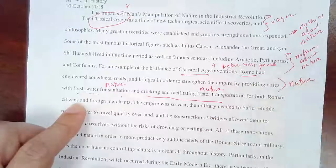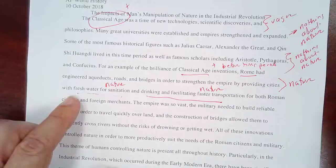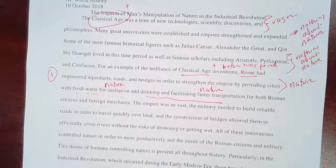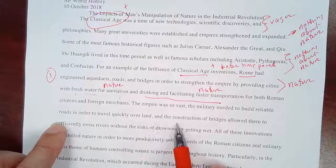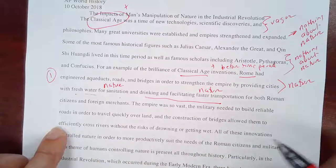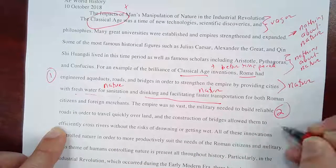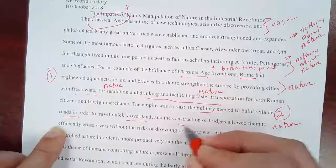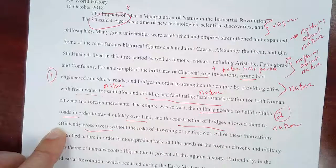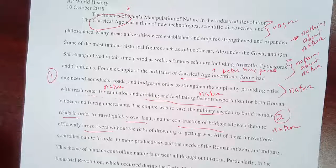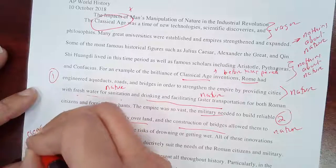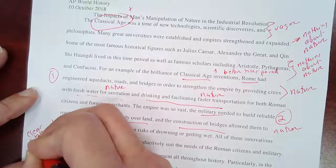We have engineered aqueducts — that's definitely an issue that connects up with nature. Then: 'both for Roman citizens and foreign merchants, the empire was so vast the military needed to build reliable roads in order to travel quickly over land, and construction of bridges allowing them to efficiently cross rivers.' So here we've got a second issue connecting directly to nature — roads over land and bridges to cross rivers. And then: 'all these innovations controlled nature' — a clear statement connecting to nature.